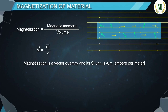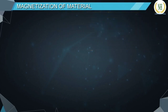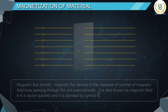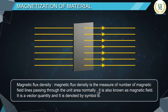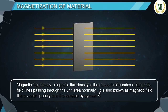Before continuing the topic, let us learn about a few terms. Magnetic flux density is the measure of the number of magnetic field lines passing through unit area normally. It is also known as magnetic field, is a vector quantity, and is denoted by the symbol vector B.